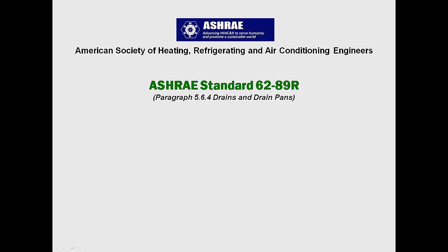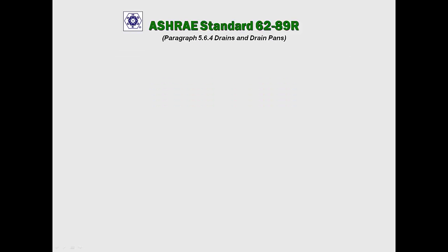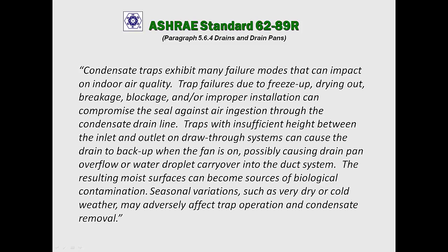Many of these critical failure modes were identified by ASHRAE in their standard 6289-R, which discusses drains and drain pans in paragraph 564. What ASHRAE standard 6289-R says about condensate traps is quoted as follows: Condensate traps exhibit many failure modes that can impact on indoor air quality. Trap failures due to freeze-up, drying out, breakage, blockage, and/or improper installation can compromise the seal against air ingestion through the condensate drain line. Traps with insufficient height between inlet and outlet on draw-through systems can cause the drain to back up when the fan is on, possibly causing drain pan overflow or water droplet carryover into the duct system. The resulting moist surfaces can become sources of biological contamination. Seasonal variations, such as very dry or cold weather, may adversely affect trap operation and condensate removal.